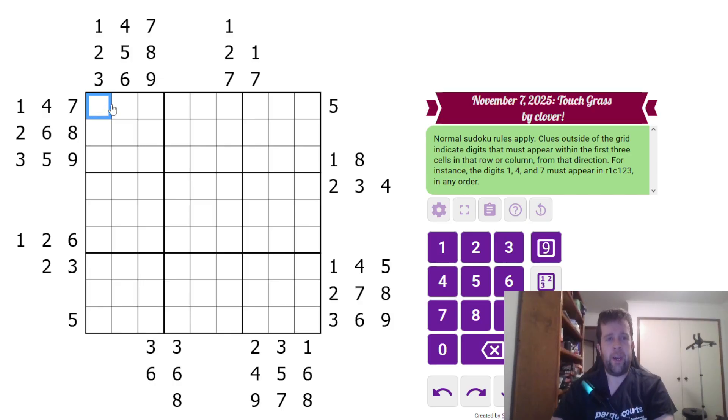Normal Sudoku rules play. Each box, each row, and each column must contain this one to nine once each. In addition, clues outside the grid, so one, four, seven, must appear in the first three cells given from that direction. So this has to be one, four, and seven in some combination. That's all that means. That's all you need to know to solve today's puzzle.